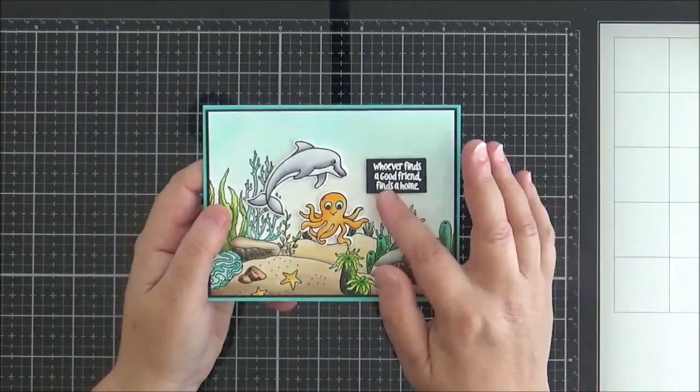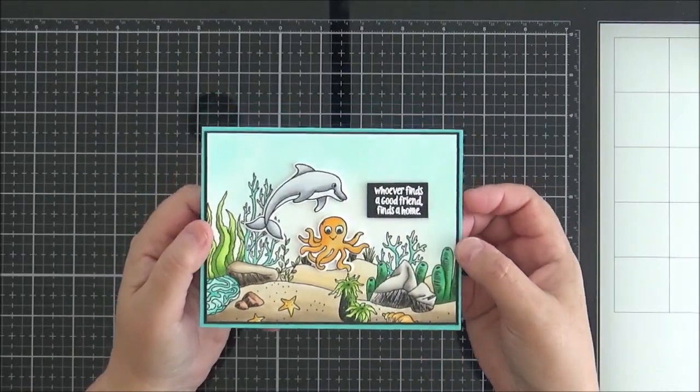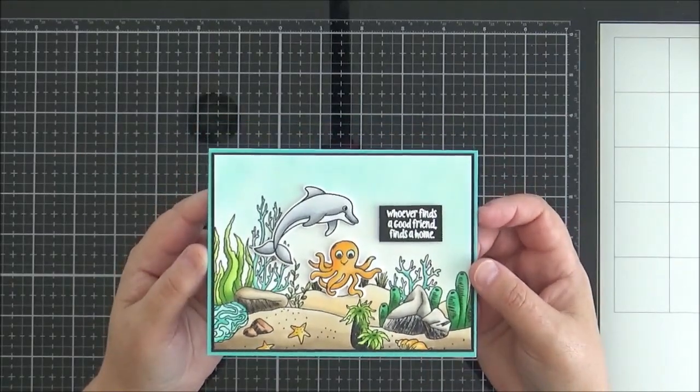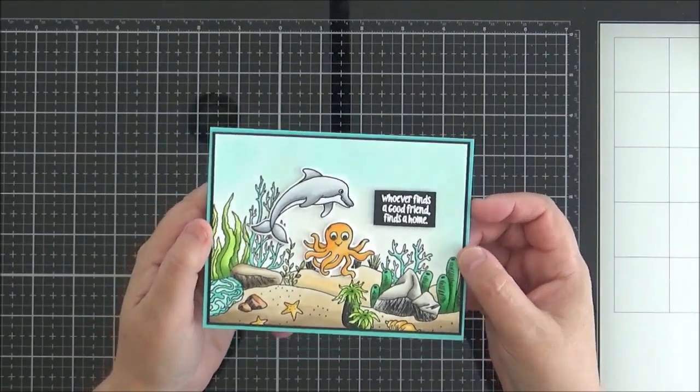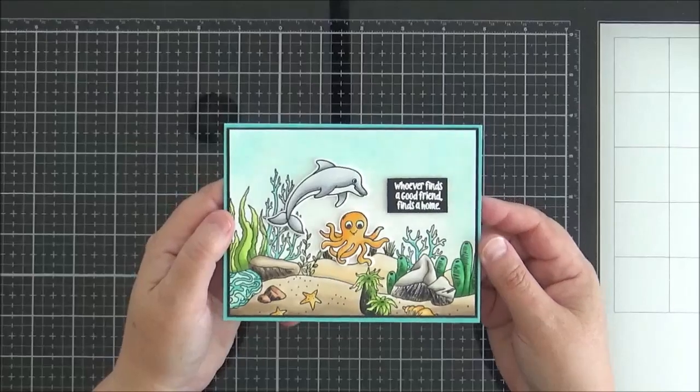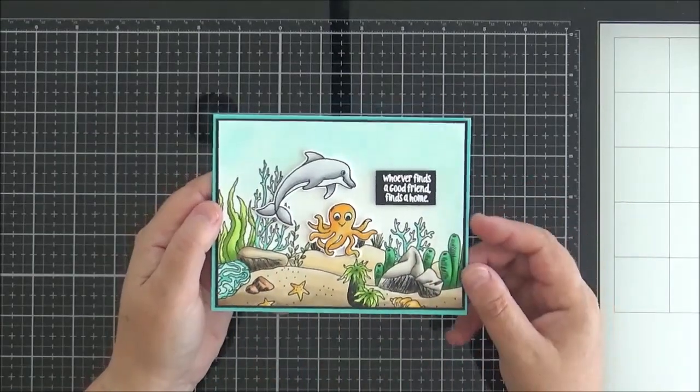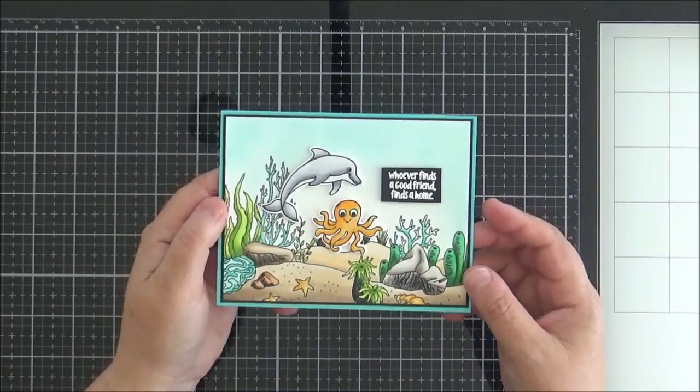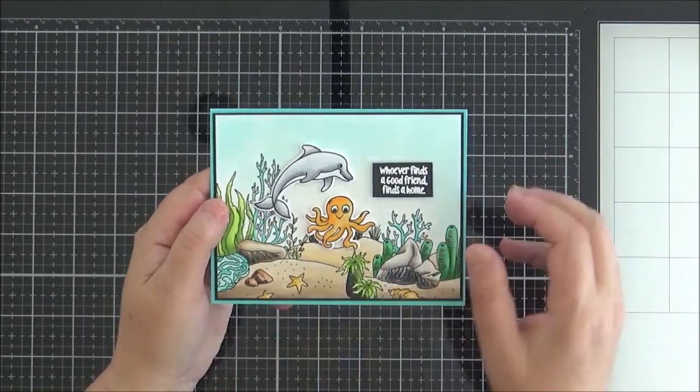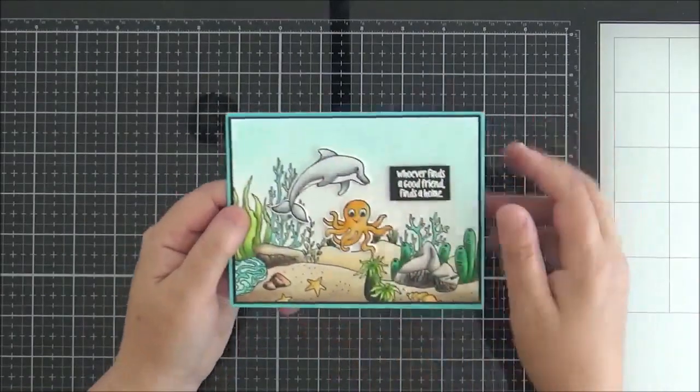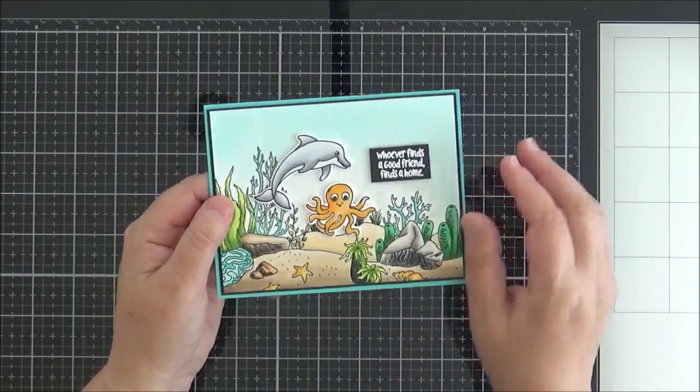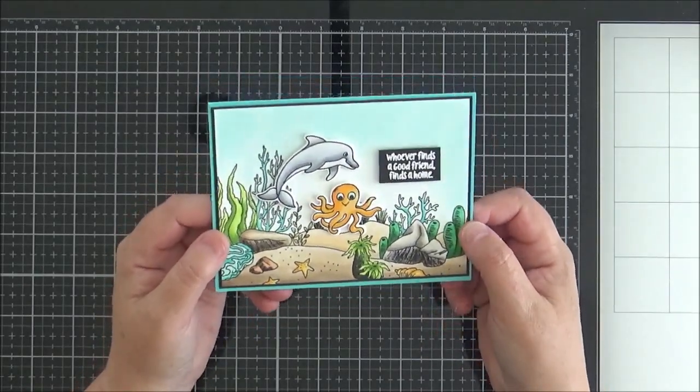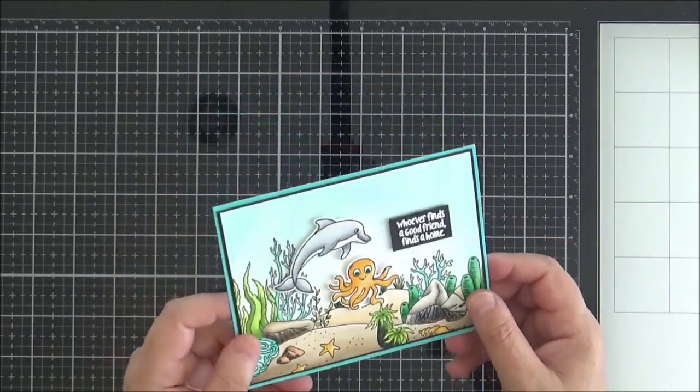And then this sentiment here, I thought it went really well with these. They look like they're two friends together. And this sentiment is actually from Cats Are Family, which came out a few months ago. And it says, whoever finds a good friend finds a home. And don't they just look like they're at home together there? So a really lovely stamp set. One of my favorite scene stamps, I think. So I know I'm going to be using this again. And yeah, I did a little bit of ink blending around the top. But really, you just stamp and color away. You can watercolor, Copic color, whatever takes your fancy. So that was that card.